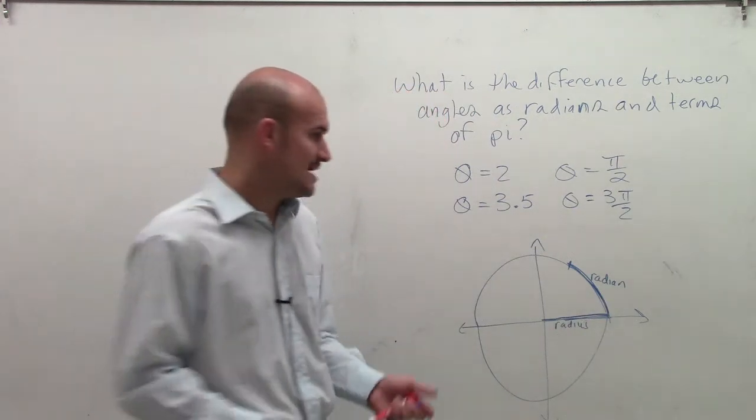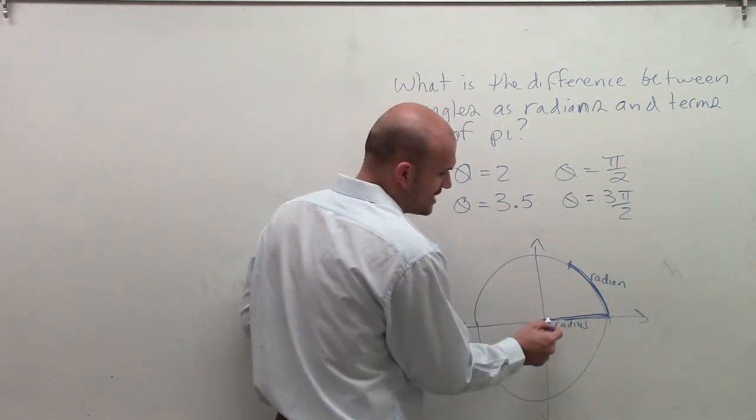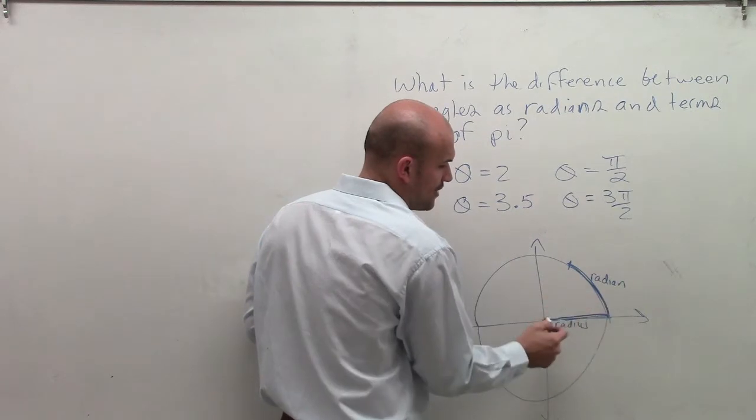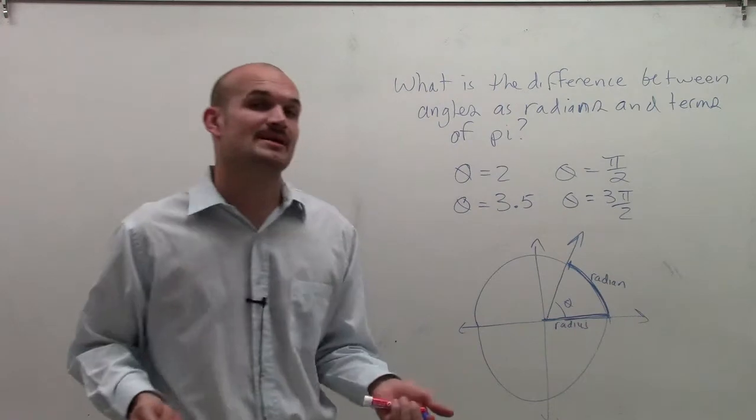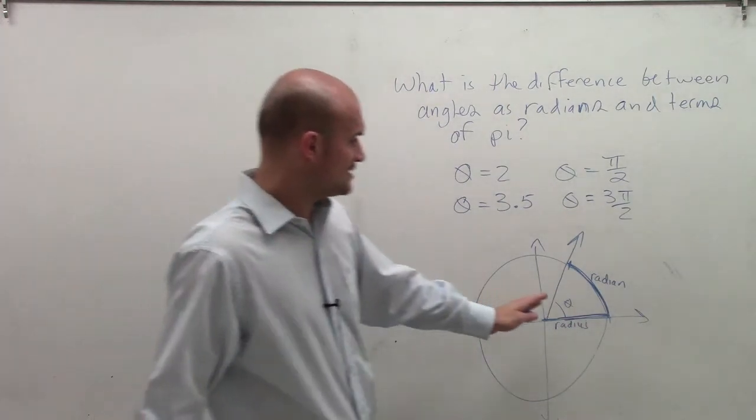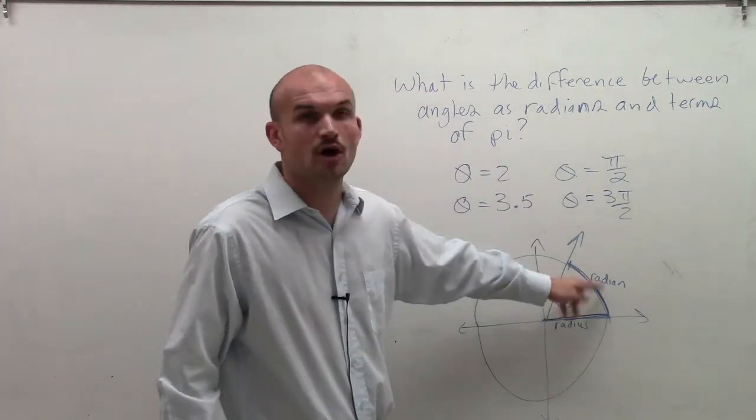So if I wanted to find the measure, remember, when I now take my ray and I extend it to that distance, we call that angle theta, which is going to be a central angle. Now, the distance or the measure of that angle theta, which we call, be one radian.